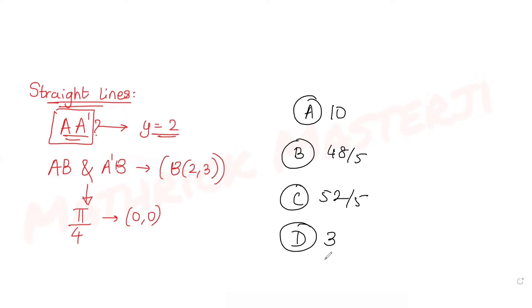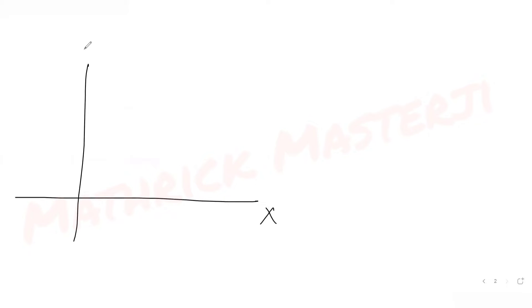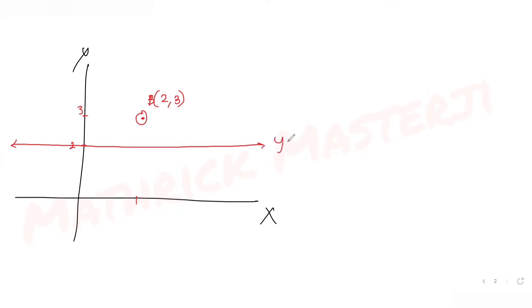Let's try to solve this question. I have point B(2, 3) given. If I draw my x and y axes, point B is at (2, 3). They have also told us A and A' are two other points which lie on the line y = 2. So if 3 is marked on the y-axis and 2 is on the x-axis, I have my line y = 2. There are two points A and A' on this line.